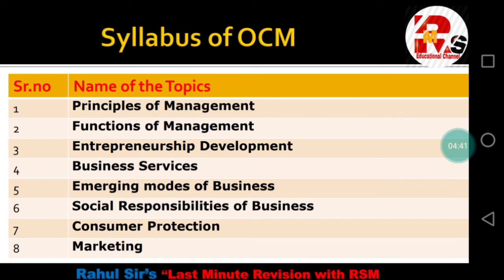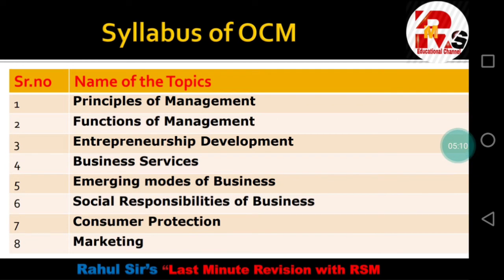Chapter six is Social Responsibilities of Business. Under the Indian Companies Act 2013 — updated from the earlier 1956 Act — it is clearly specified that organizations meeting certain criteria must spend something for the benefit of society. This is called CSR, or Corporate Social Responsibility. All these factors are going to be covered in chapter six.